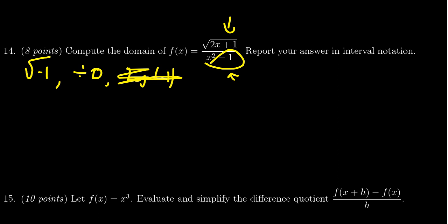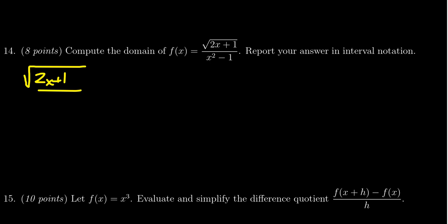But we have to worry about taking the square root of a negative and dividing by zero. And so those are the only real domain issues we have to worry about when it comes to these calculus functions here. So when you look at the square root, we need to make sure the radicand, that is the 2x plus 1, needs to be non-negative.